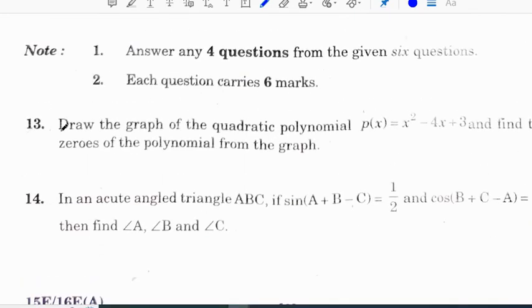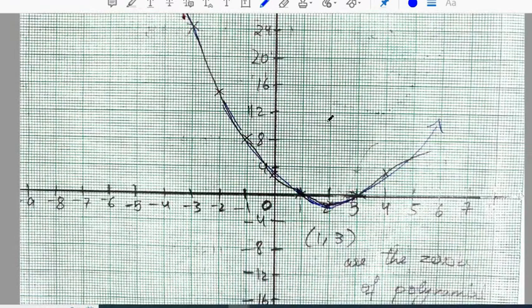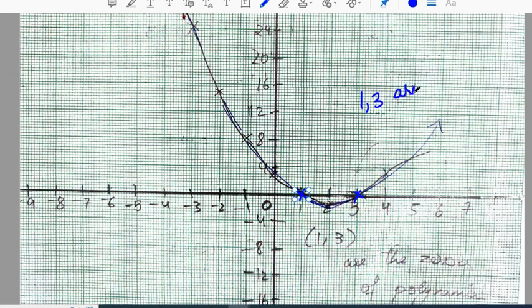Section 3: Draw the graph of the quadratic polynomial x² - 4x + 3 and find the zeros of the polynomial from the graph. After taking the points, our graph will meet at (1, 0) and (3, 0). Therefore, 1 and 3 are zeros of the given polynomial.